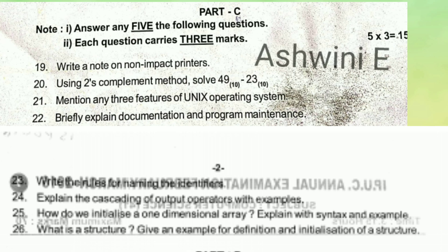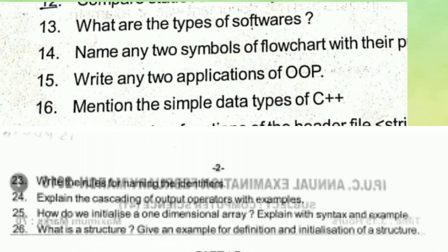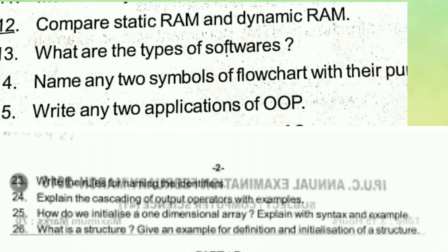Next is part C. In this part C, you need to answer any 5 questions out of 8 questions. In the first chapter, that is unit A, you will get 2 questions. 19th and 20th question will be from unit A, 21st and 22nd will be from unit B. 4 questions will be from programming in C++, that is from 23rd to 26th.